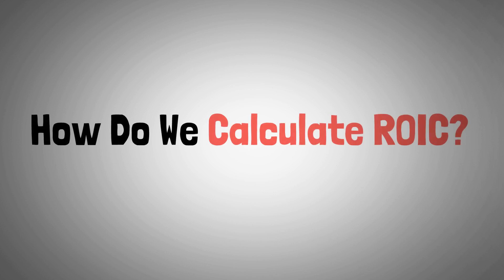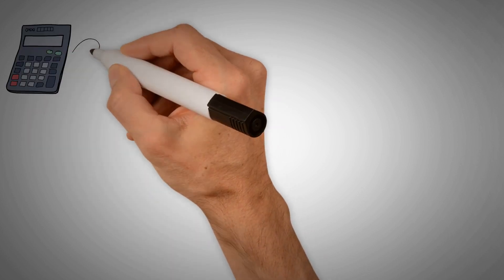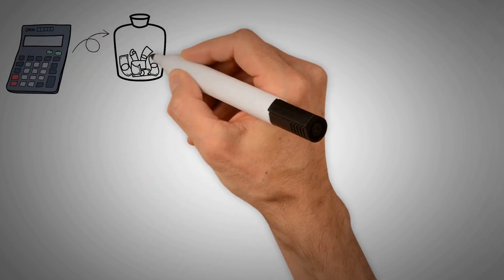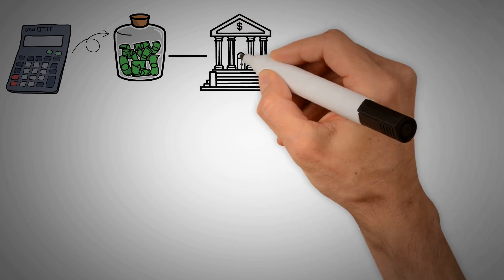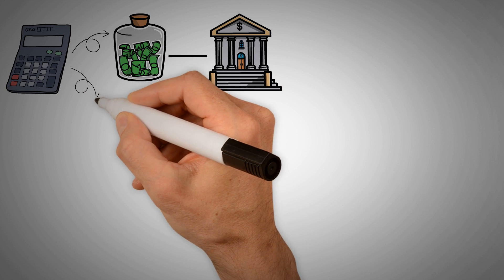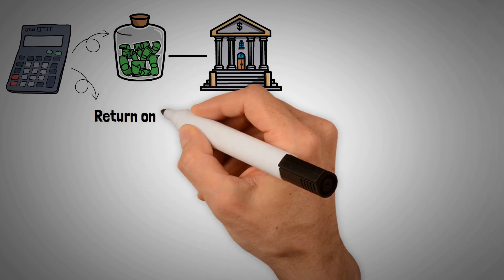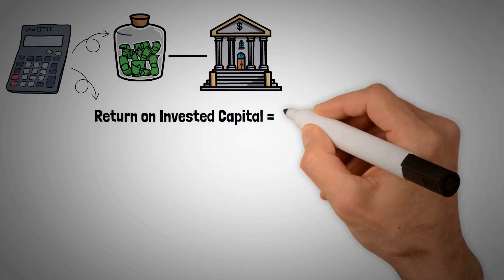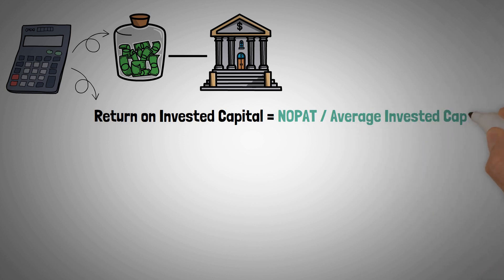How do we calculate ROIC? The formula for return on invested capital measures how well a company generates cash flow compared to the capital it has invested in the business. Here is the formula, and we will break it down. Return on invested capital equals NOPAT divided by average invested capital.